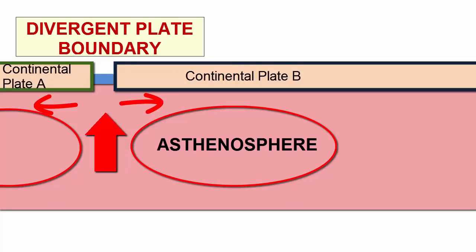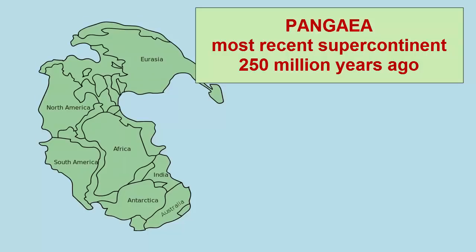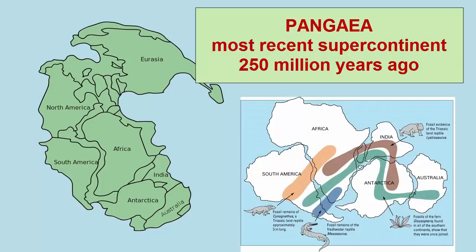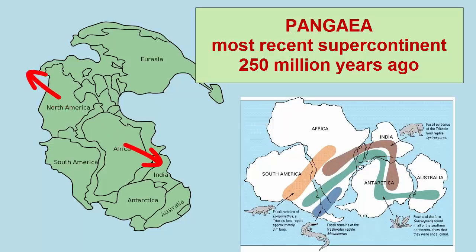The most recent supercontinent that tore apart to create the current geometry of Earth's plates was called Pangaea, and based on fossil evidence, it existed 250 million years ago, when all the continents we know today were fused together—one continent and one surrounding ocean. After the supercontinent began to break apart, and the plates thinned enough,